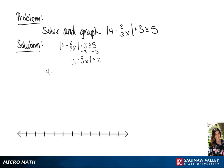This will give us 2 inequalities. 4 minus 2 thirds x is greater than or equal to 2, or 4 minus 2 thirds x is less than or equal to negative 2.